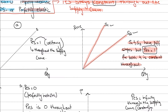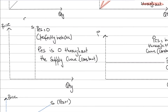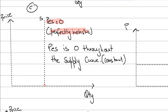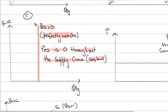The third scenario, diagram C, shows PES equals 0 — perfectly inelastic. Whenever supply is perfectly inelastic, the supply curve is drawn as a vertical straight line starting from the quantity axis (x-axis) and going upward. For this case, PES is 0 throughout the entire curve — it is constant and will not change as you move up the curve.